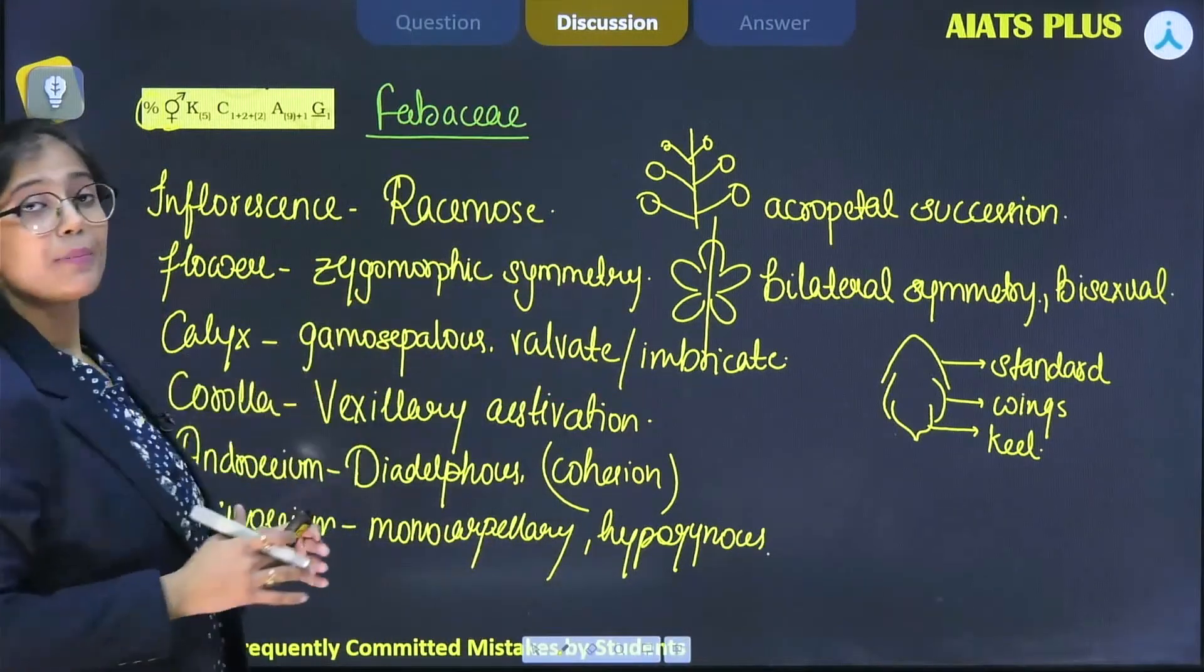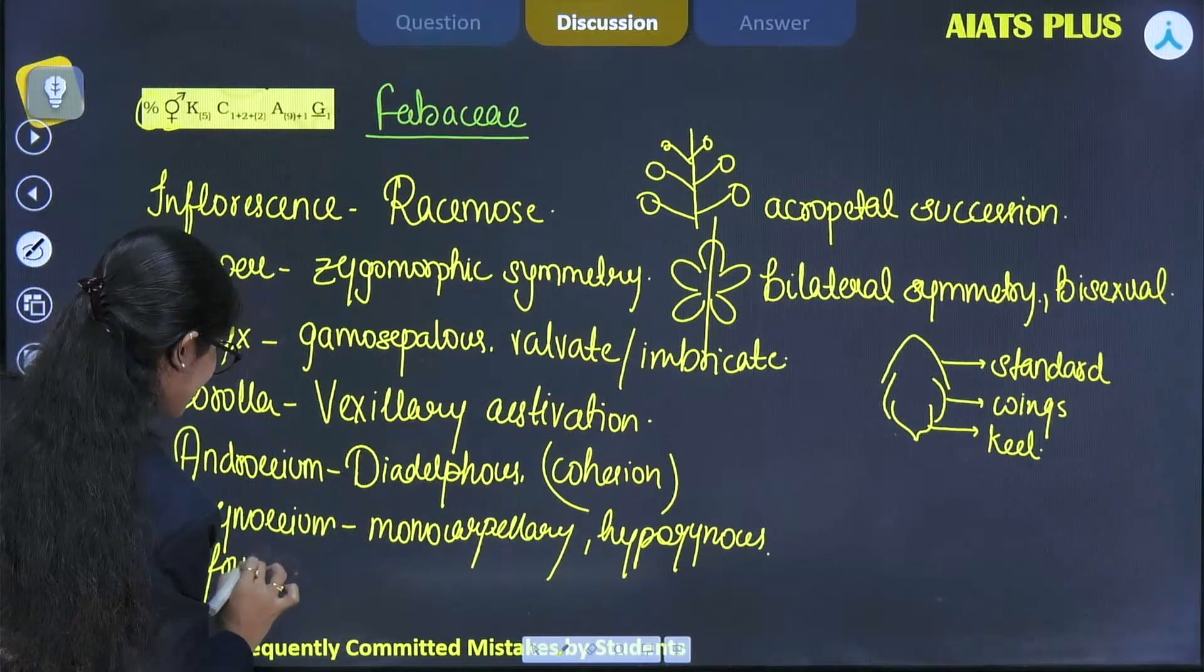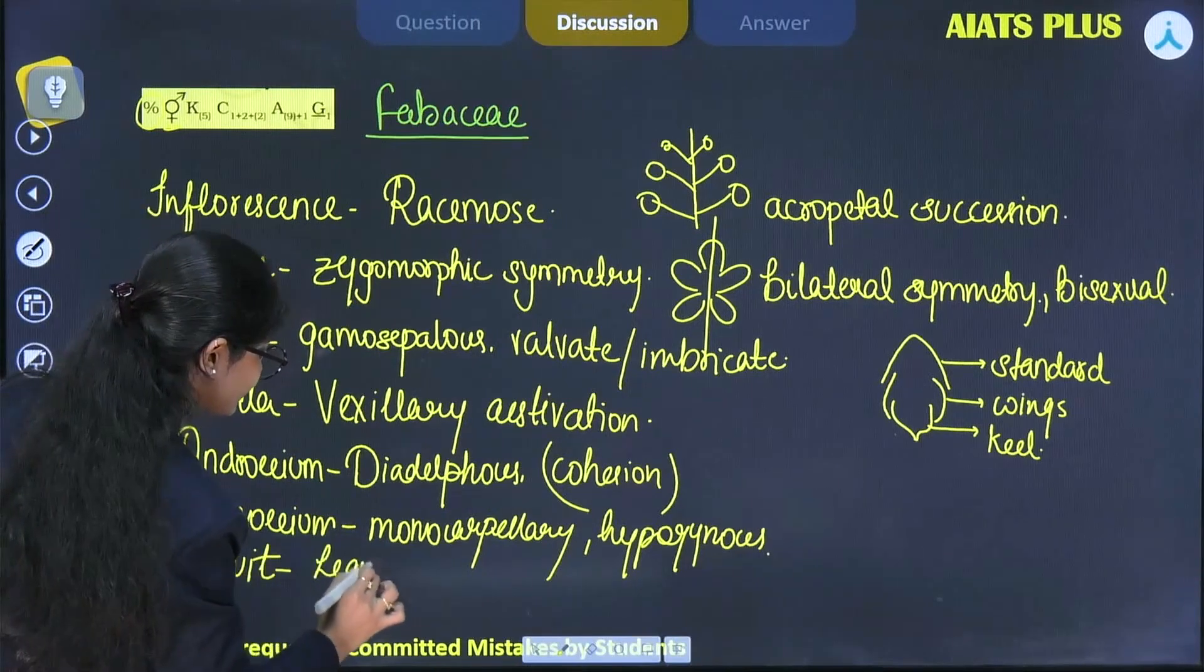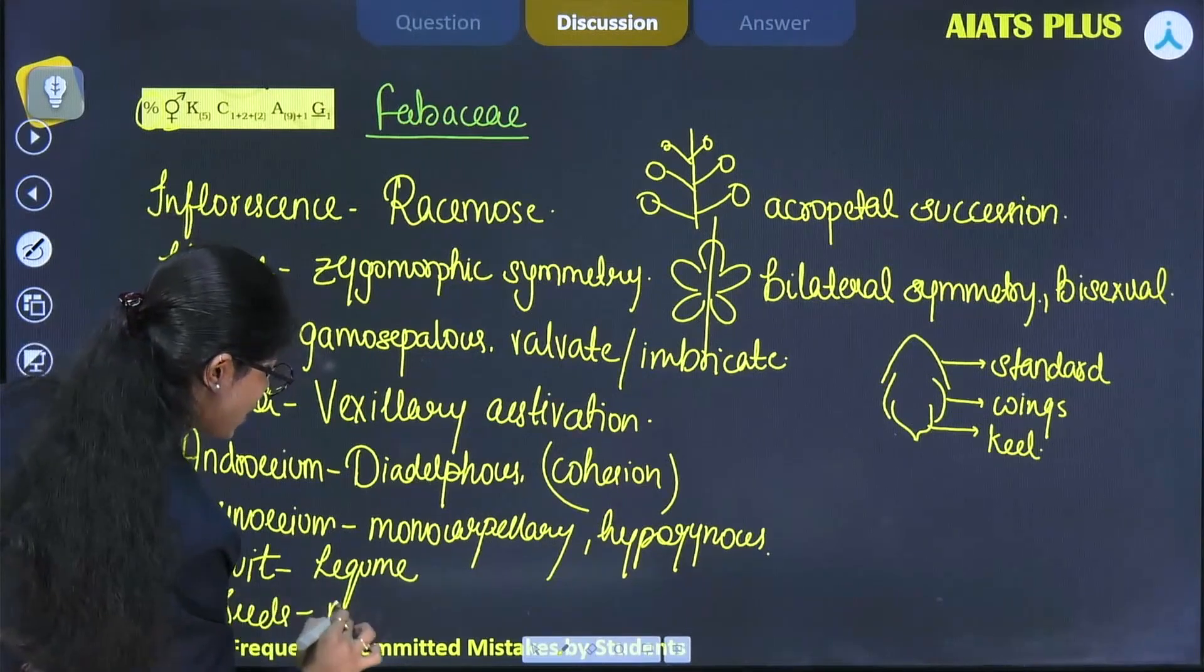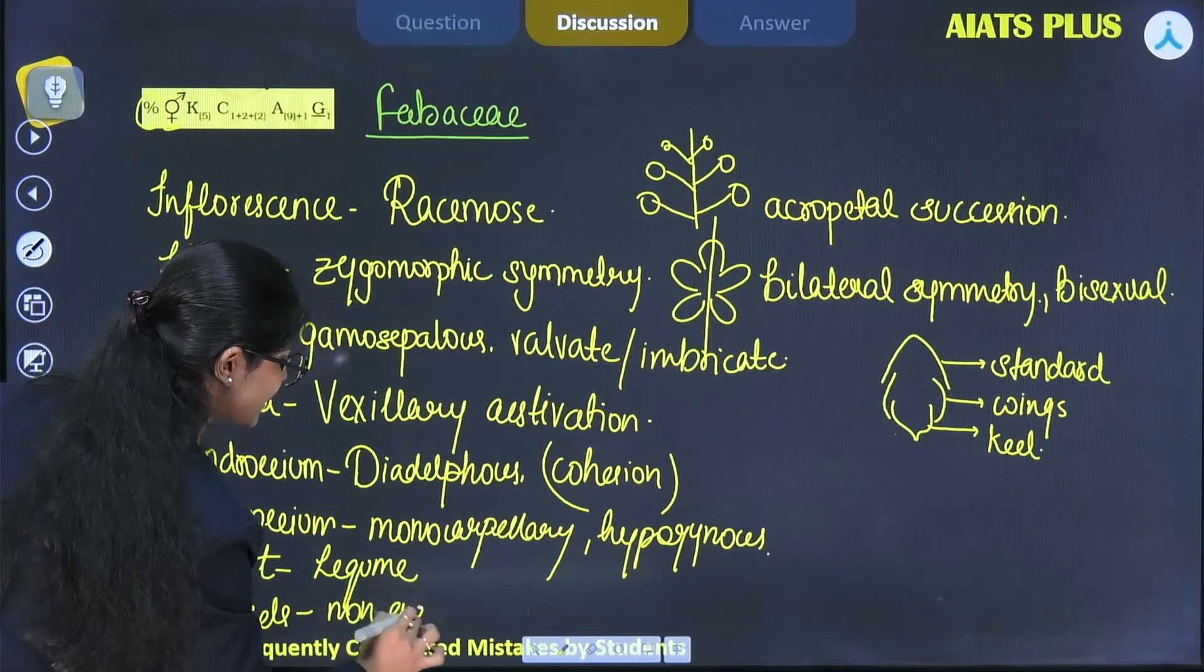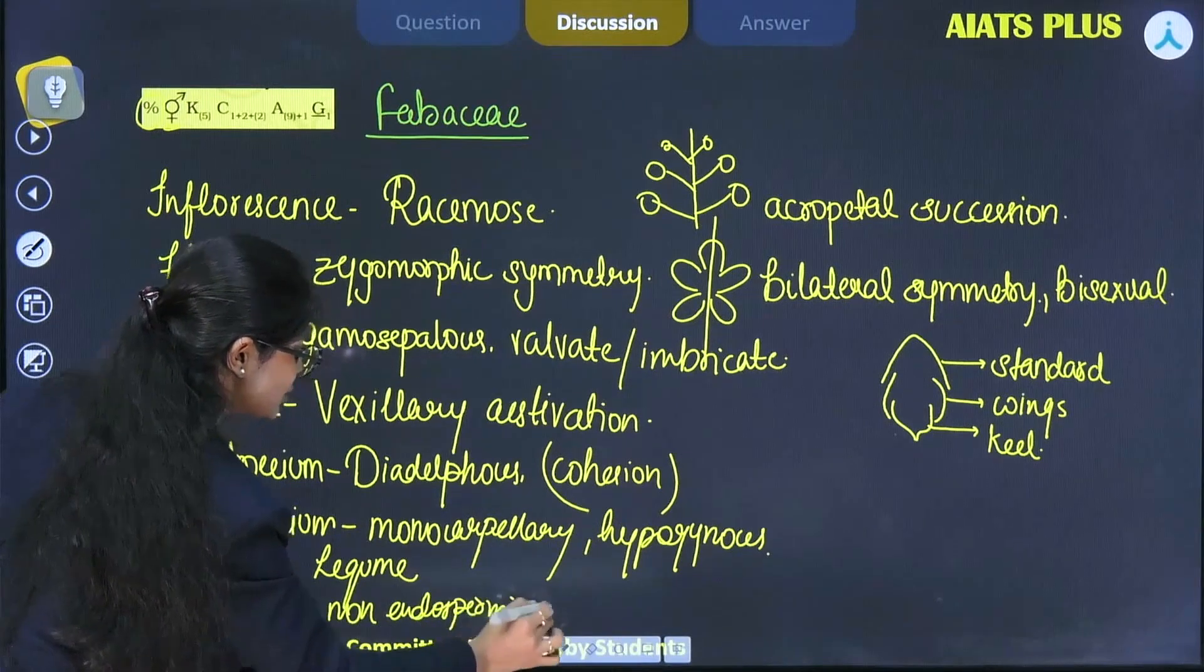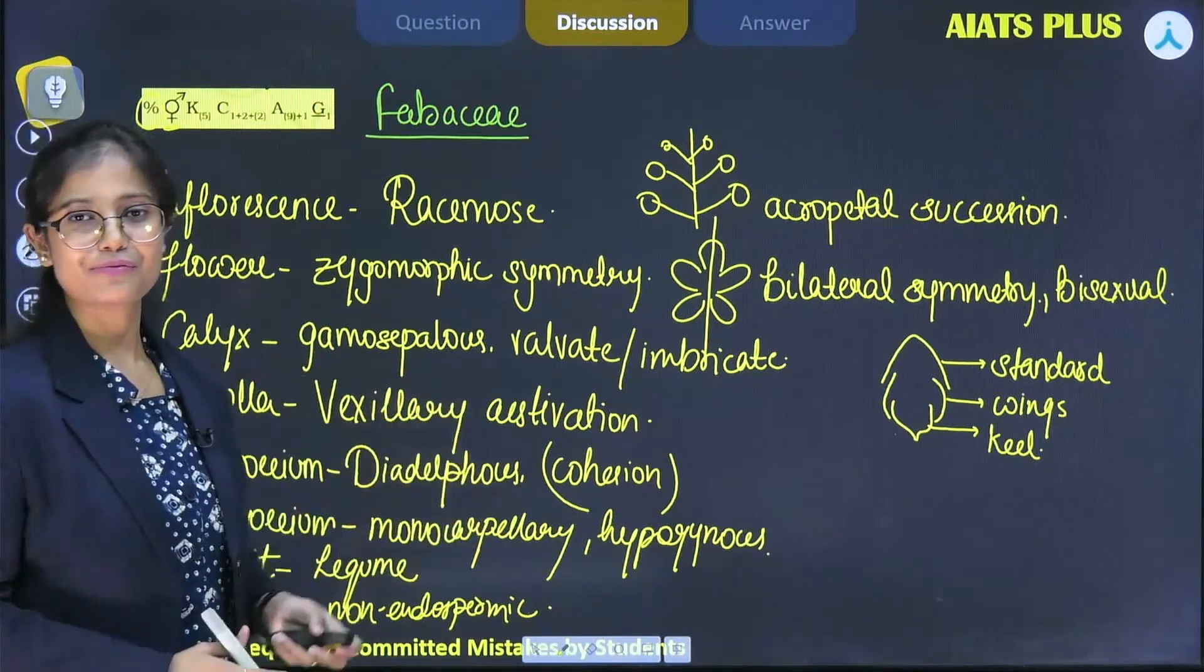Now we talk about the type of fruit found in the members of Fabaceae, which is legume. The seeds formed are non-endospermic, meaning during their development the endosperm is completely consumed. These are the complete features for members of Fabaceae.